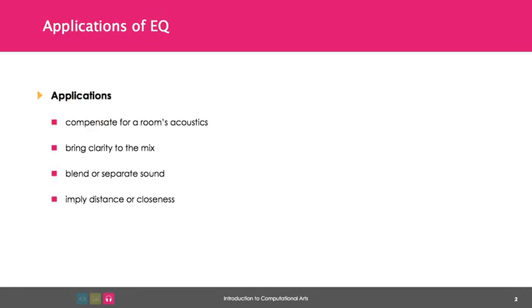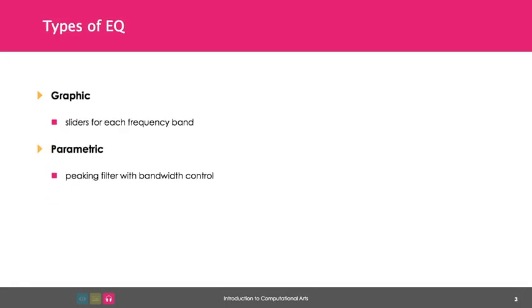EQ can compensate for a room's acoustics, can bring clarity to a mix, help blend or separate sound, and can even imply distance or closeness of the sounding object. There are many types of equalizers.